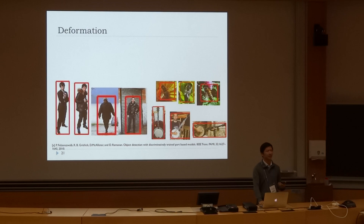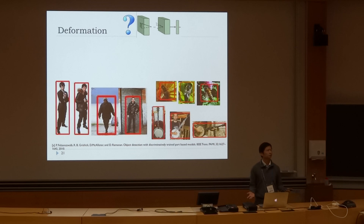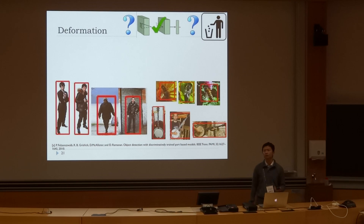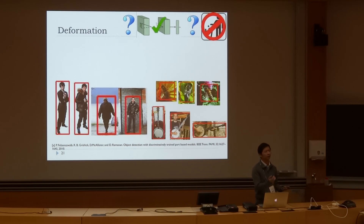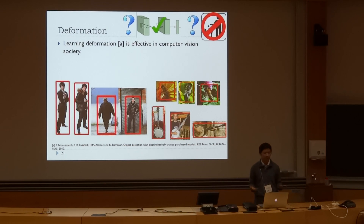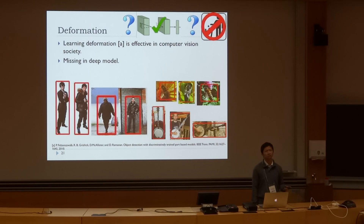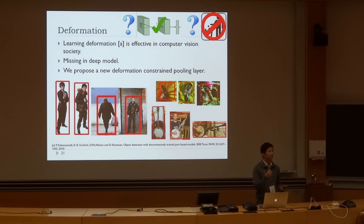Deep networks are revolutionary, but we should also use the excellent works from computer vision researchers. What we use here is the deformation-based approach to handle deformation. Deformation learning has been a very effective approach in computer vision, but it is missing in deep models. Therefore, we propose the def-pooling layer, which is used for learning the deformation of visual patterns.